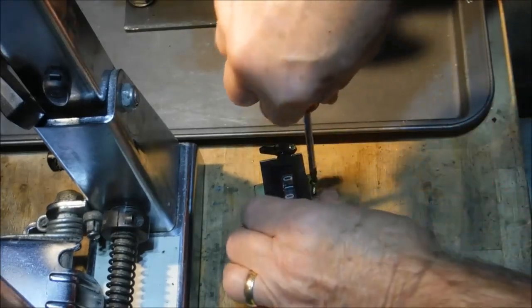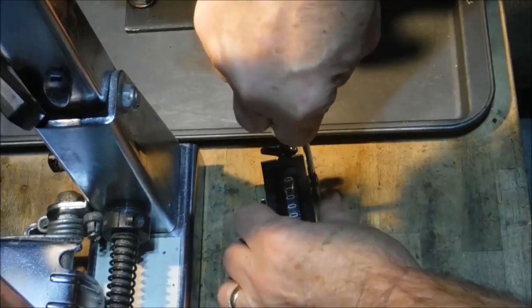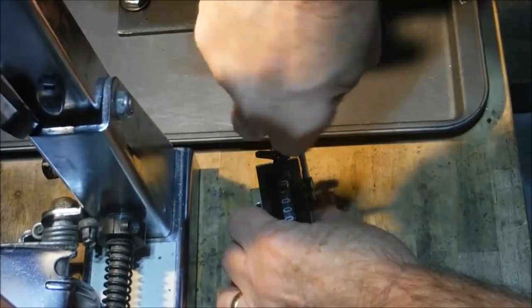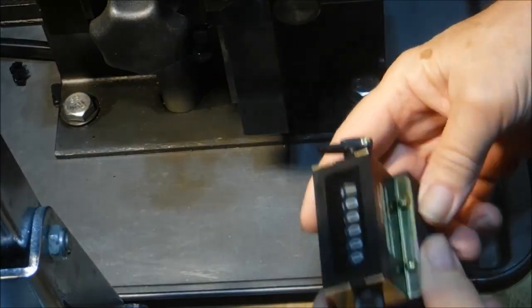See how convenient that is. Make sure we get that centered on there. Okay, so I've got the counter mounted to the block. Now the next thing we have to work on is fastening it down to the tray.